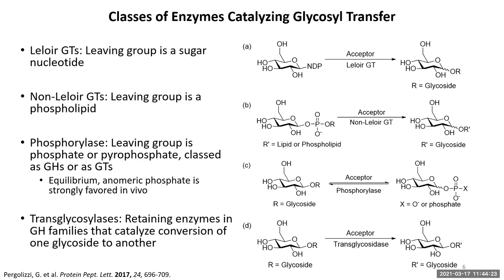To break these two broad categories down a little bit, for the GTs there are really two main categories. The first are the Leloir GTs, which have a sugar nucleotide as the leaving group, and the non-Leloir GTs, which have a phospholipid leaving group. We aren't going to touch on those much more because we weren't able to find many crystal structures of these, as they're found in membranes and are difficult to isolate. I should also mention the phosphorylases, where the leaving group is a simple phosphate or pyrophosphate. Based on amino acid sequence, they can be classed as either GHs or GTs, and these enzymes do catalyze both sides of the reaction but strongly favor one in vivo.